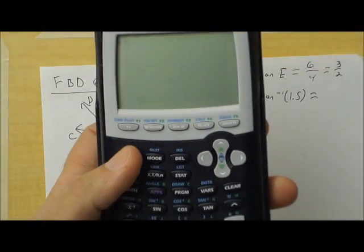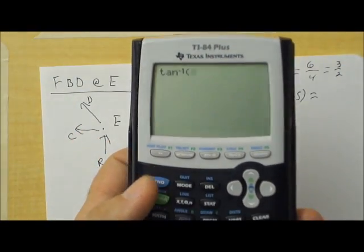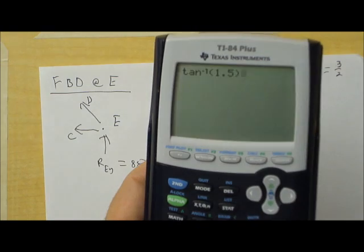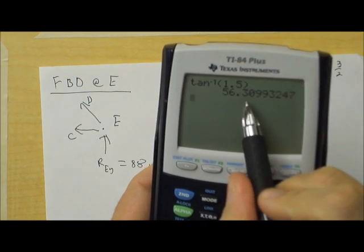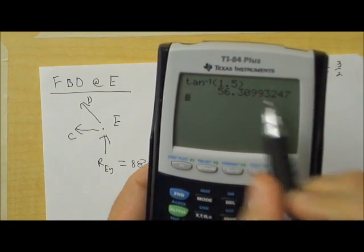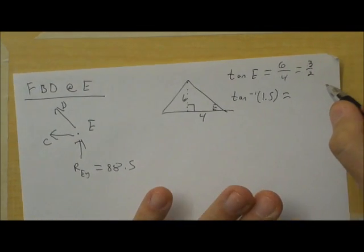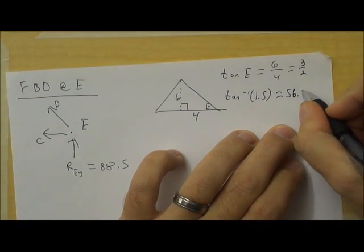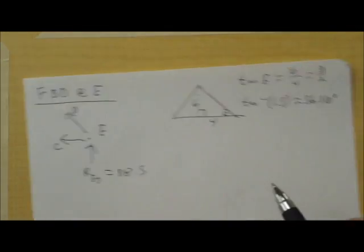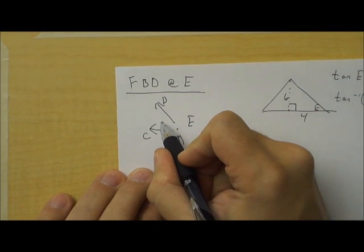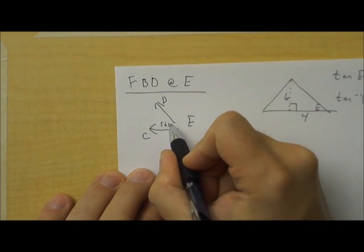and we'll type that in. And second tangent 1.5, close parenthesis, 56.310 degrees. Okay. So, I'll go ahead and copy that in here. 56.31 degrees.